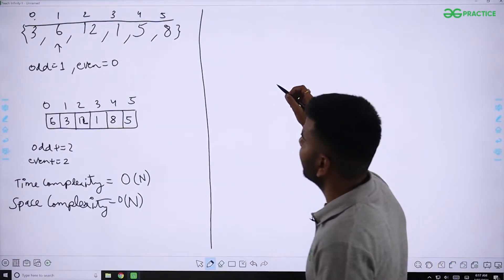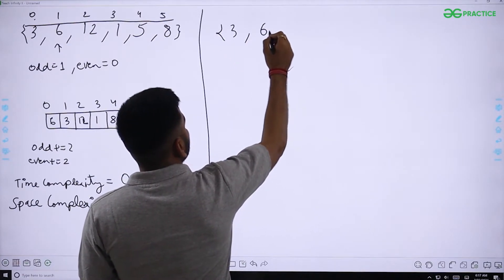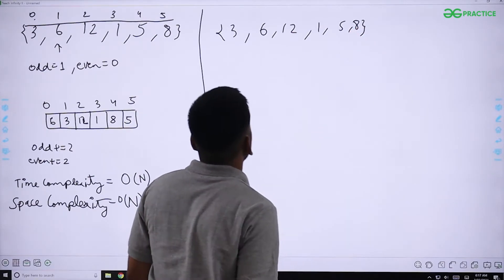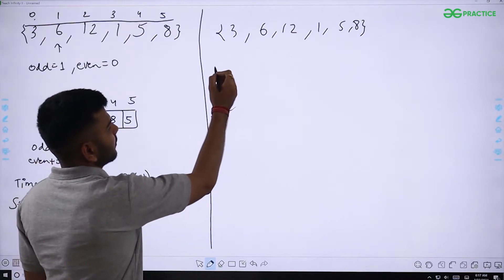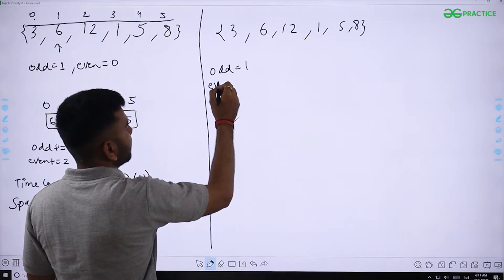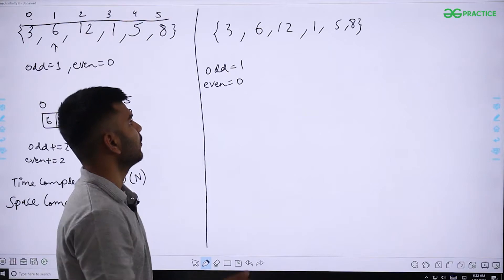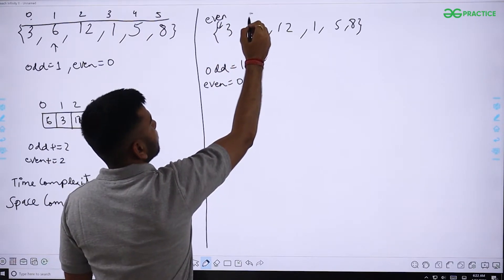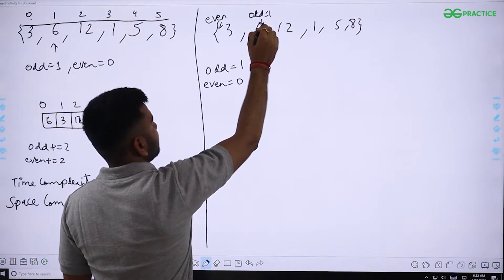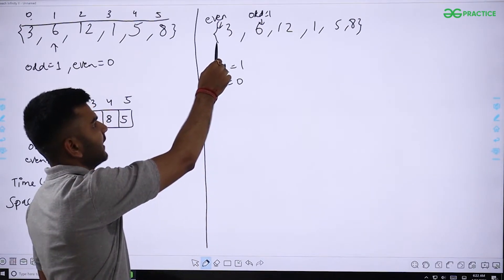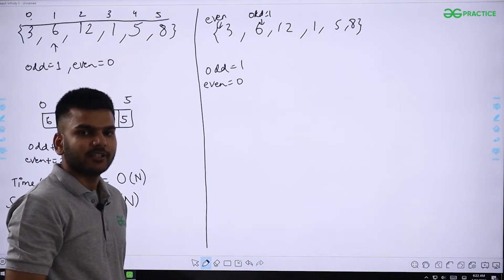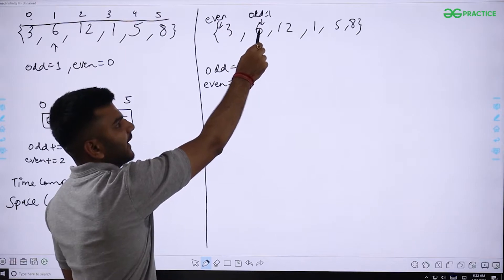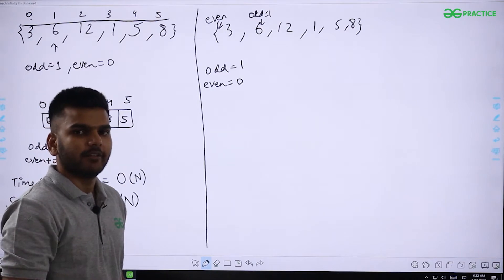Let us now look at the in-place approach. Using the same original array [3, 6, 12, 1, 5, 8], we again initialize the odd pointer to 1 and the even pointer to 0. The even pointer is pointing to index 0, but the element there is odd — so we exit that inner loop. Similarly, the odd pointer at index 1 holds an even element — so we exit that loop too and swap those elements.